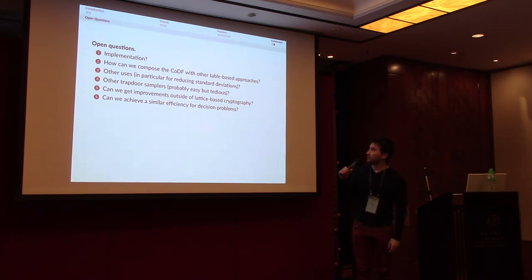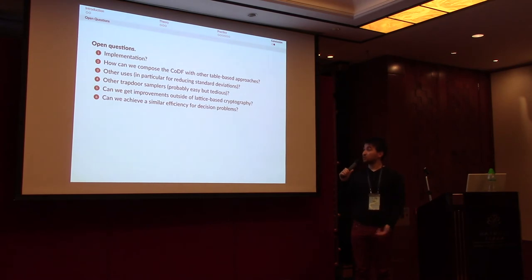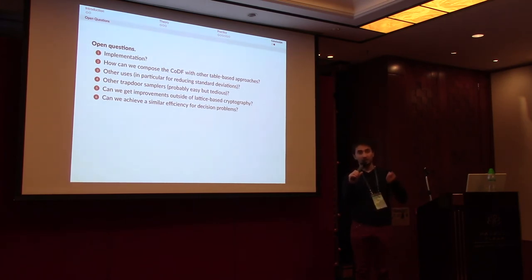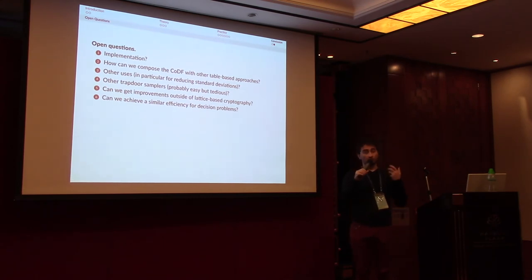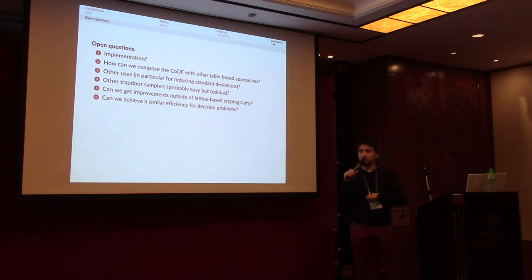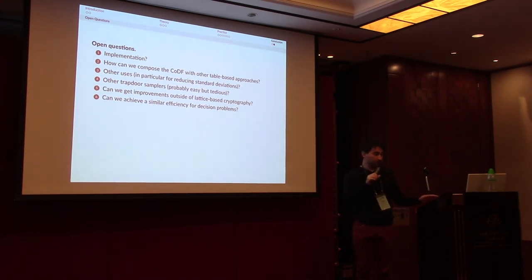A few open questions: Can we use these techniques outside of lattice-based cryptography? Lattice-based cryptography is certainly not the only field where real distributions make the statistical distance suboptimal, and switching to a tighter divergence could help broadly. Can we achieve similar efficiency for decision problems? Can we apply this to other trapdoor samplers? This is probably straightforward but very tedious to do rigorously. And can a Rényi-friendly table be implemented correctly, in particular with respect to side-channel attacks?